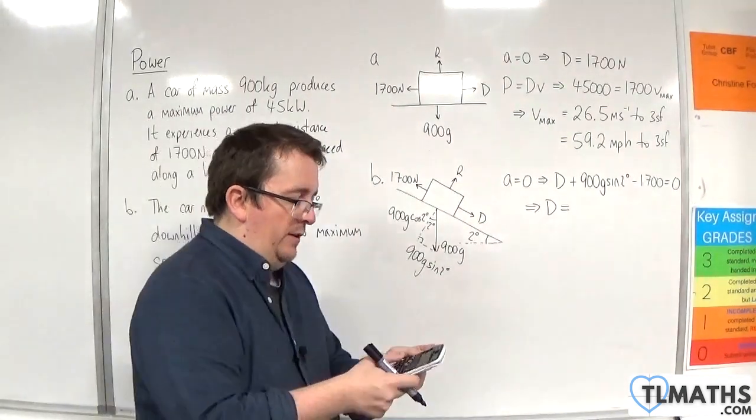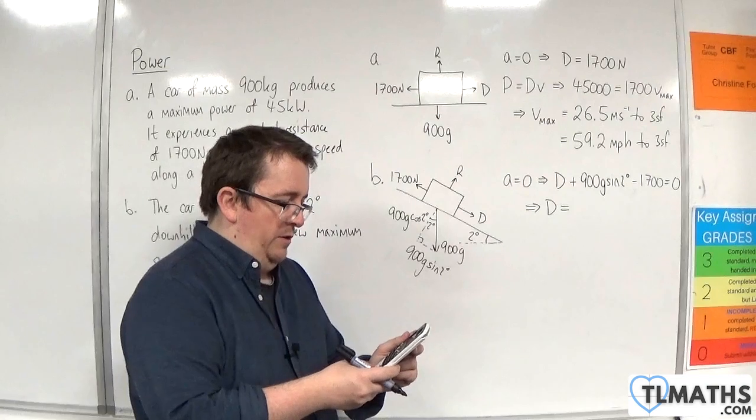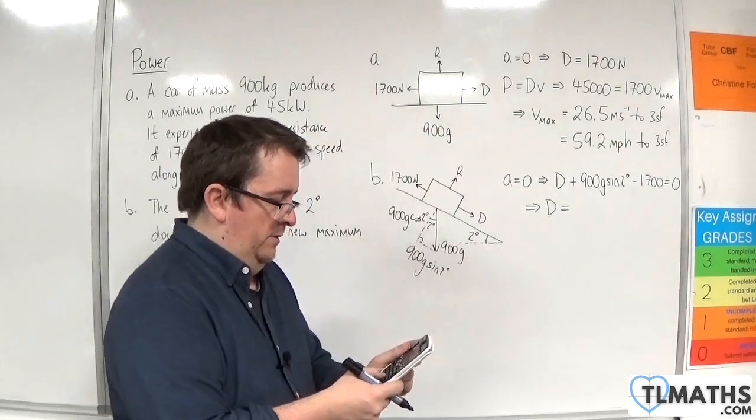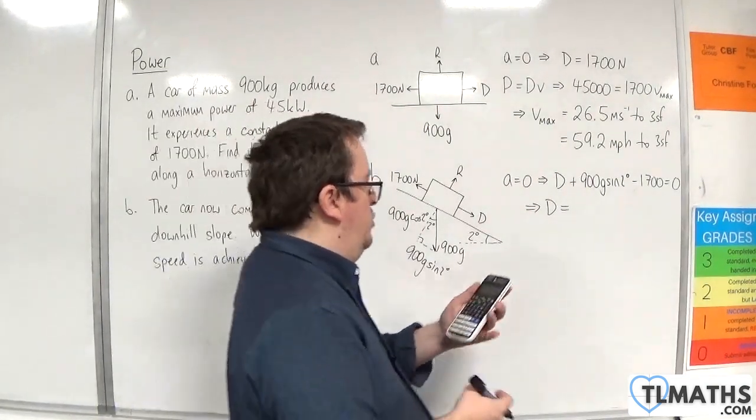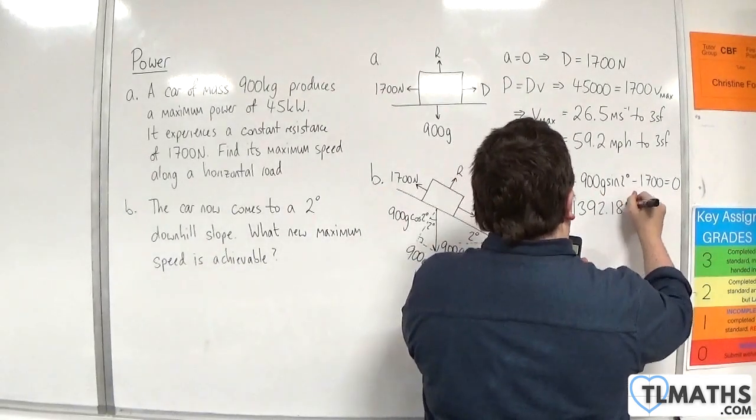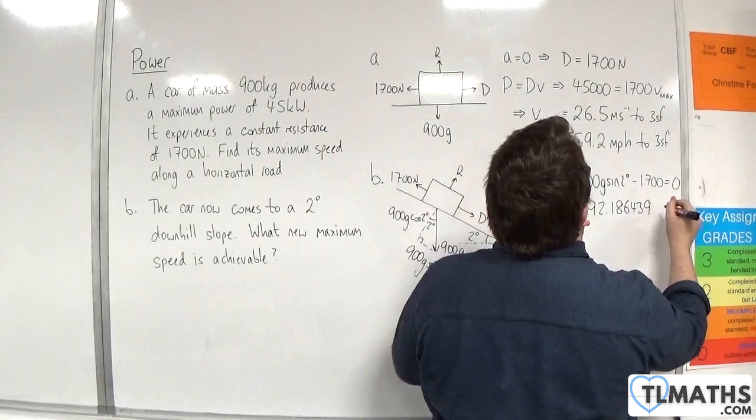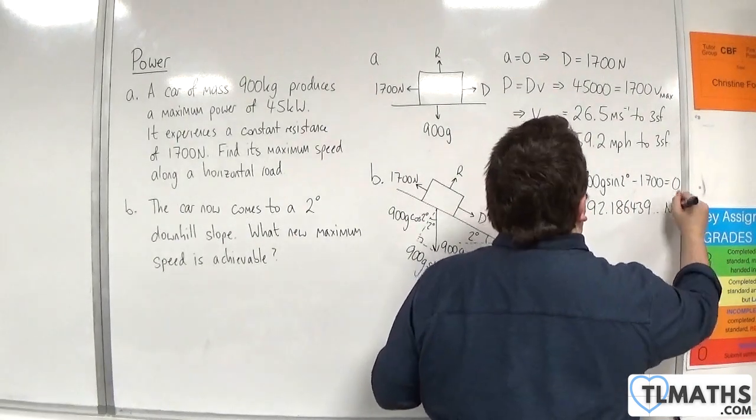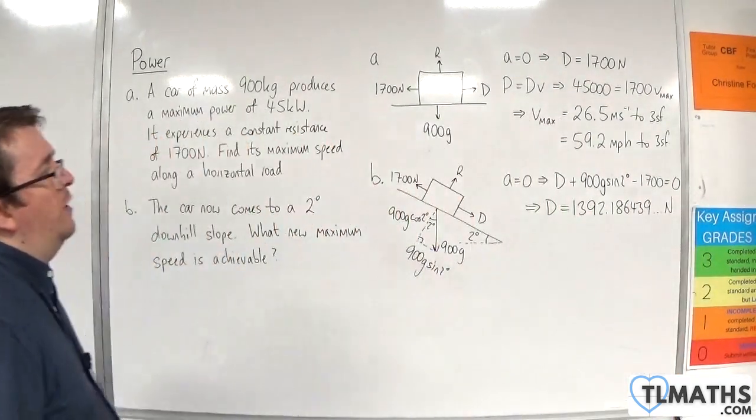So D, in this case, is 1700 take away 900 times 9.8 times sine of two degrees. Now make sure that your calculator is in degrees mode. Mine was in radians. So we should get 1,392.186439. And that's newtons. So that's my driving force.